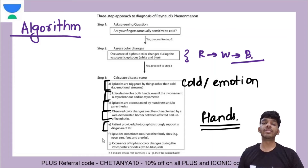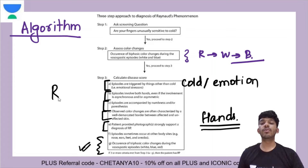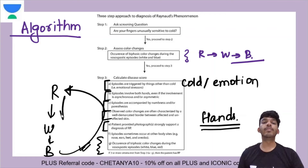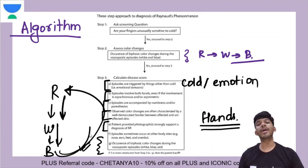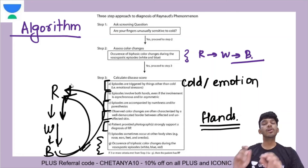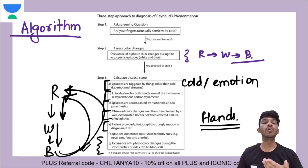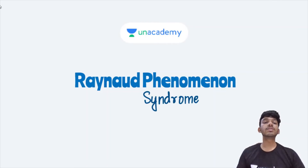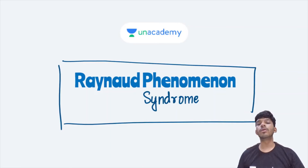Finally, you identify this triphasic color change: red, white, blue. When blood supply gets restored it becomes red again, then white, then blue, and when blood supply is restored again. That red-white-blue flickering is why I associate it with Raynaud's syndrome or Raynaud's phenomenon. That brings us to the end of our understanding of Raynaud's phenomenon or Raynaud's syndrome. Thank you so much.